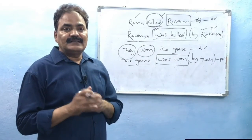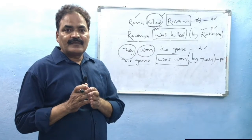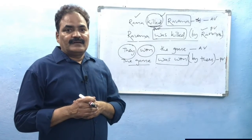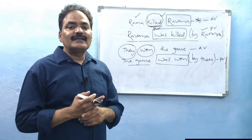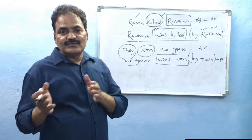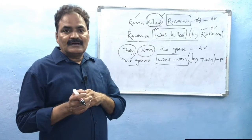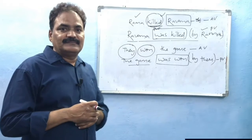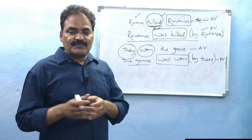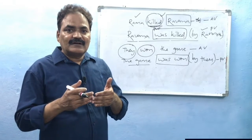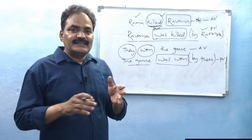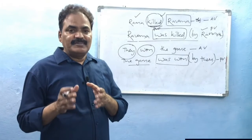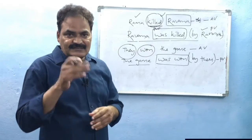Now we will see the changes that occur in the passive voice when a sentence is changed from active voice. There are three major changes we see while a sentence is changed into passive voice from active voice without changing its meaning. This is very important because most people do not understand this properly and follow only one stereotype method of changing every sentence. But changing of voice depends strictly on three rules. Let us see what they are.